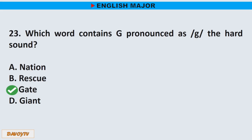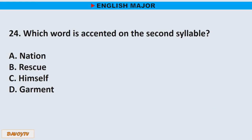Question number 24. Which word is accented on the second syllable? A. Nation. B. Rescue. C. Himself. D. Garment. The correct answer is letter C. Himself.